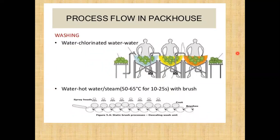The next unit operation is washing. Washing is very important because after harvesting, different impurities may stick to the commodity surface, or during the growing period there may be chemical residues. These can be cleared with the help of washing, using different chemicals so that the spread of diseases may be avoided. Chlorination treatment is most often followed for washing. Also, hot water treatment or steaming can be given — hot water treatment at 55 to 65 degrees Celsius for 10 to 25 seconds using a static brush process for descaling.